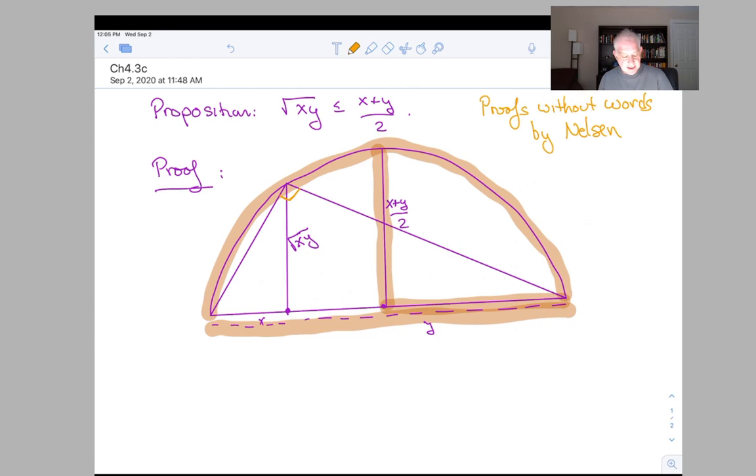And basically the claim here is that the altitude, the height of this right triangle is square root of xy. And the radius of the circle is x plus y over 2. And so just look at the picture. It's obvious that the square root of xy is less than or equal to x plus y over 2.